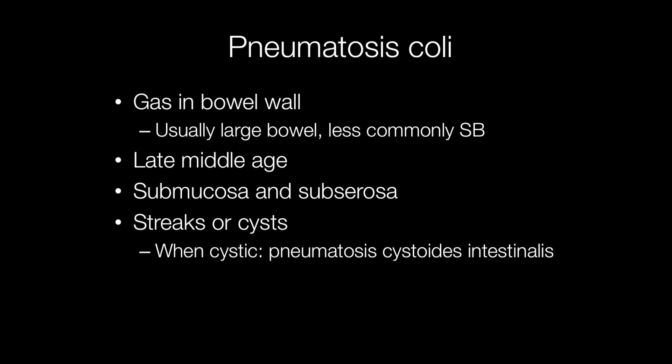When it occurs in adults it occurs in late middle age, and when it occurs in neonates it is usually associated with necrotizing enterocolitis. It is in the loose tissues of the bowel wall where the gas collects as either bubbles, cysts, or streaks in the submucosa or subserosa.